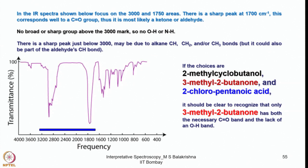In the IR spectrum shown, focusing on the 3750 cm⁻¹ region there is a sharp peak at about 1700 cm⁻¹ corresponding to a C=O group, most likely a ketone or aldehyde. There is no broad or sharp group above 3000 cm⁻¹, meaning no O–H or N–H is present, ruling out carboxylic acid. There is a sharp peak just below 3000 cm⁻¹ possibly due to C–H, CH₂, or CH₃ bonds, but it could also be part of an aldehyde C–H bond.